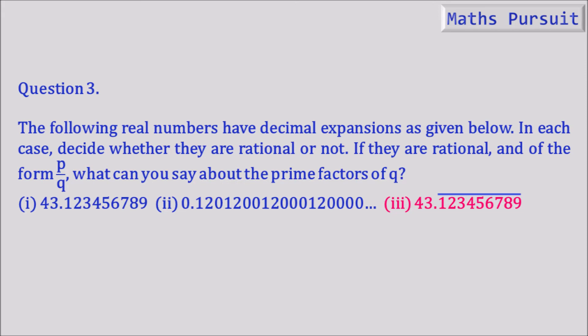And the given number is 43.123456789 with a bar on this number. So it means that this particular number is repeating like 1, 2, 3, 4, 5, 6, 7, 8, 9 and then it will again repeat. So let's see how we can solve this question.